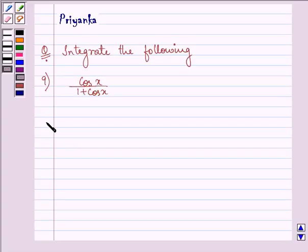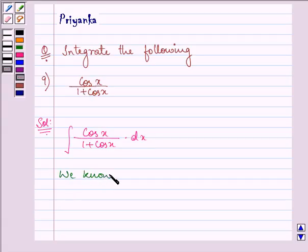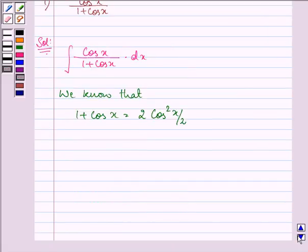Hello friends, how are you all today? Let us integrate this function. Here the function given to us is cos x divided by 1 plus cos x dx. Now we know that 1 plus cos x equals 2 cos square x by 2.